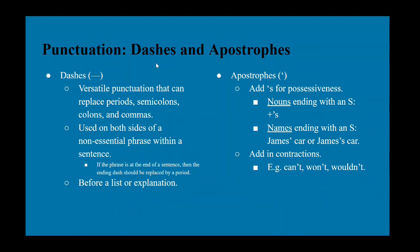Apostrophes have just two or three basic rules. For nouns ending with an S, you add apostrophe-S. For names ending with S, it doesn't really matter — you can say 'James's' or 'James'' in the context of James's car. You also add apostrophes in contractions.